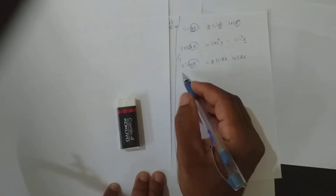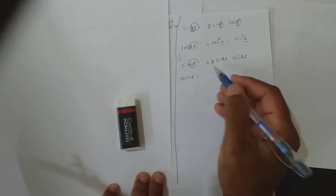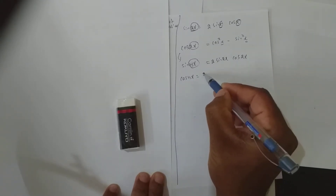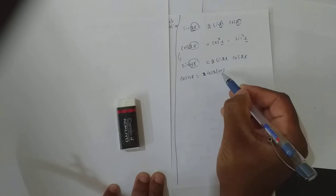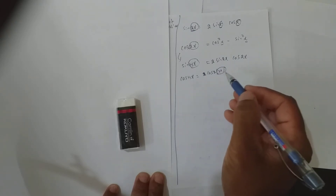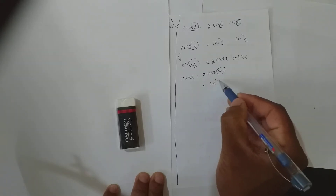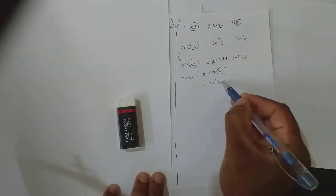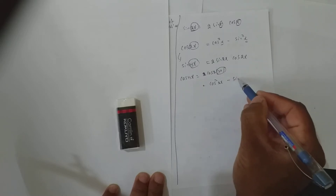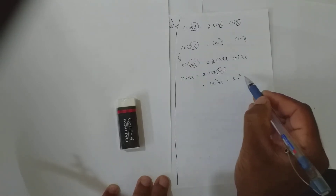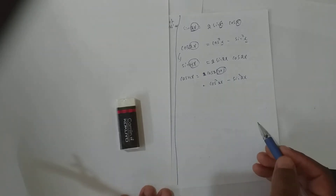Same way if I want to find cos 4x — if you want to prove cos 4x, it is nothing but cos 2 into 2x. So this whole thing is x if I assume. It is of the form cos 2x. So it is cos²2x minus sin²2x. This is how we get it.